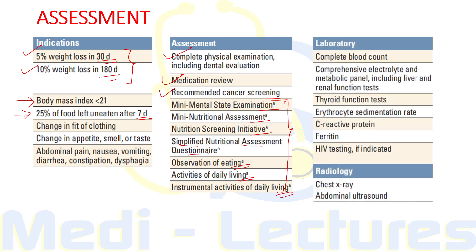Initial lab tests include CBC, liver function tests, renal function tests with electrolytes, thyroid function test to rule out hyperthyroidism, ESR to rule out chronic inflammatory or infectious conditions, CRP and ferritin as acute phase reactants, and HIV testing if clinically indicated. Initial radiologic investigations include chest radiography and abdominal ultrasonography. Specific investigations are also needed based on clinical judgment.